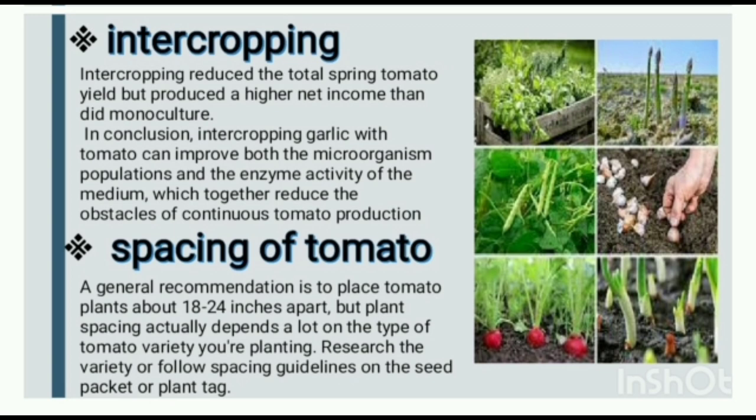Encourage natural predators and practice intercropping. Intercropping reduced the total spring tomato yield but produced a higher net income than monoculture. In conclusion, intercropping garlic with tomato can improve both the microorganism populations and the enzyme activity of the medium, which together reduce the obstacles of continuous tomato production.